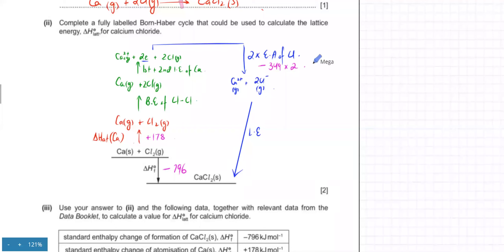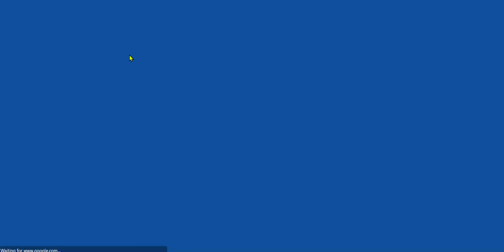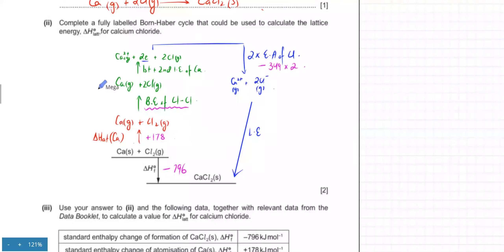The electron affinity of chlorine atoms is −349 kJ/mol, so that's −349 × 2. You have to be careful with the moles — if you have two Cl atoms, the electron affinity is multiplied by two. What's missing is the bond energy of Cl–Cl, which you find in the data booklet. The bond energy of Cl–Cl is 242 kJ/mol — that's +242 because you're breaking the bond, so it's endothermic.